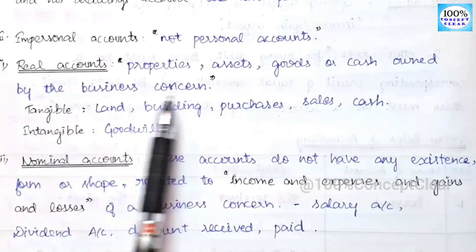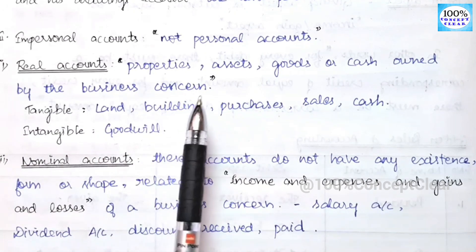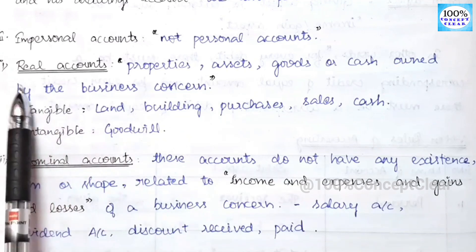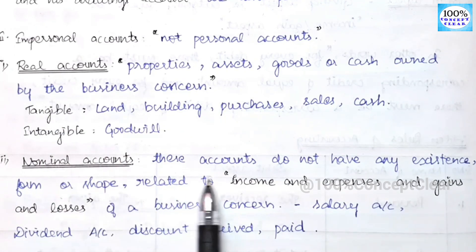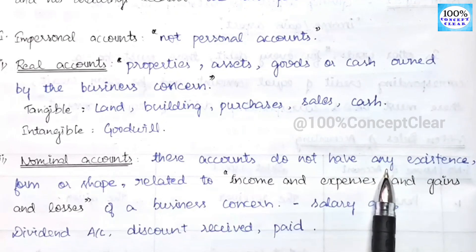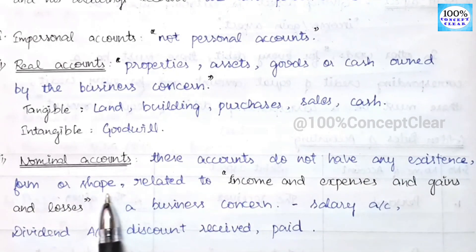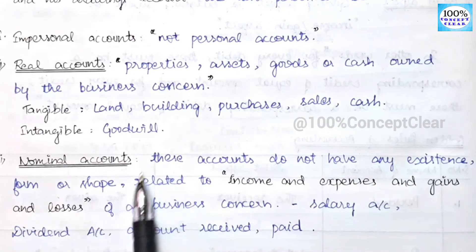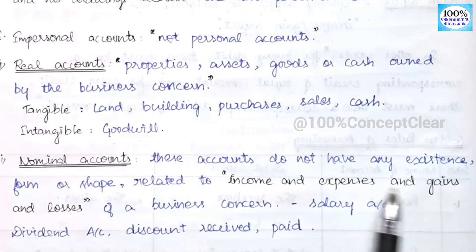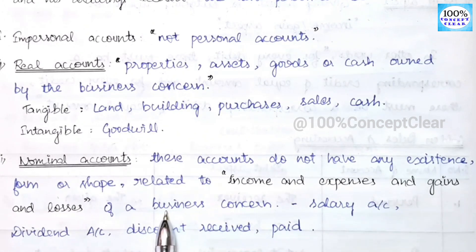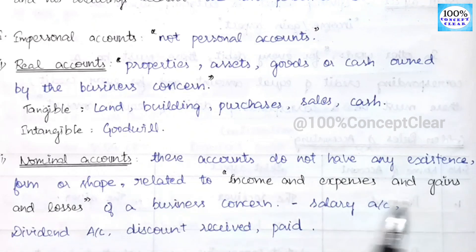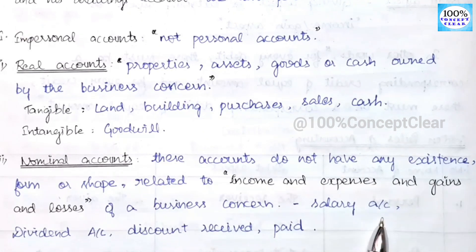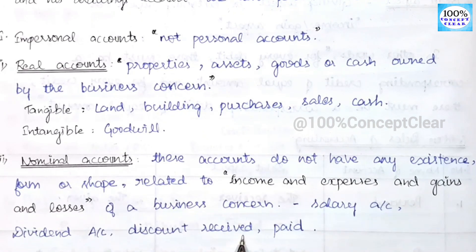Goodwill is an asset, so goodwill is a real account even though it is intangible — it has no physical existence, feel, or shape. What is related to the nominal account? Income, expenses, gains, and losses of a business concern. For example, salary account, dividend account, discount received or paid account — these do not have any physical existence, so they are nominal accounts.